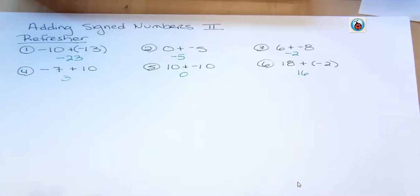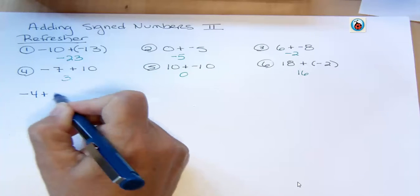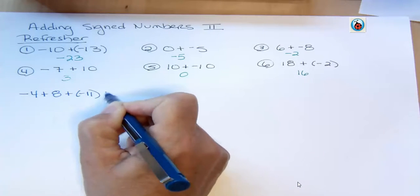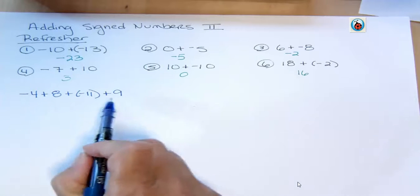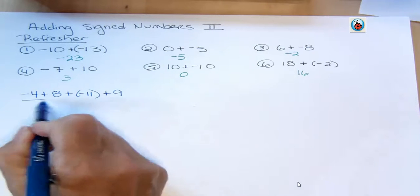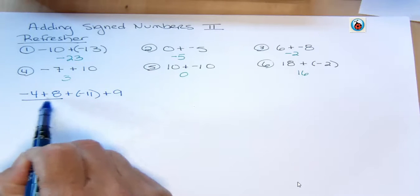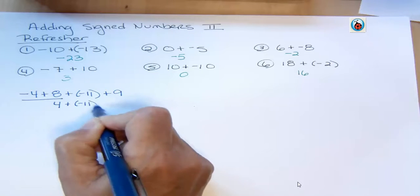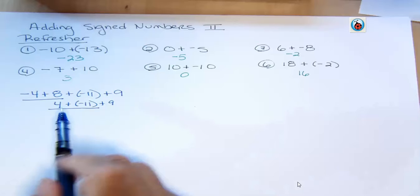All right, so what I want to add in addition to that for this video is what if you have a string of them like negative 4 plus 8 plus negative 11 plus 9? Well, one way to do it is just to work it left to right. So you would start off and say, what's negative 4 and 8? Well, I have more positives there, so I'm going to have positive 4. And then I would go to the next two. What is this going to be? Well, this is going to be more negatives.